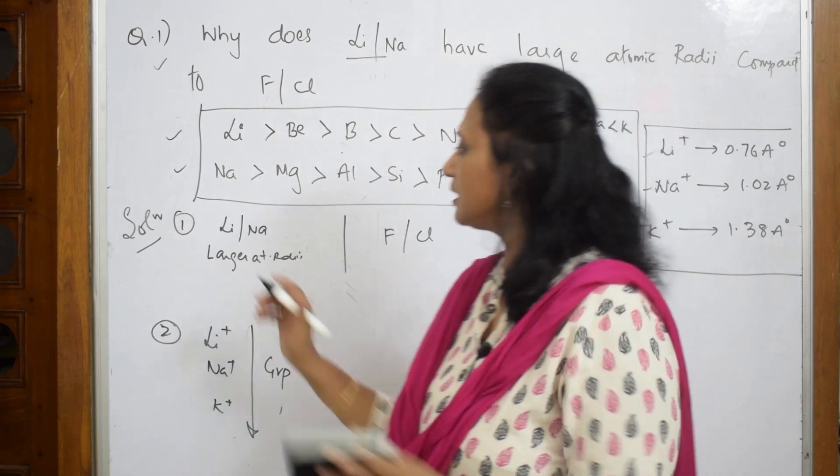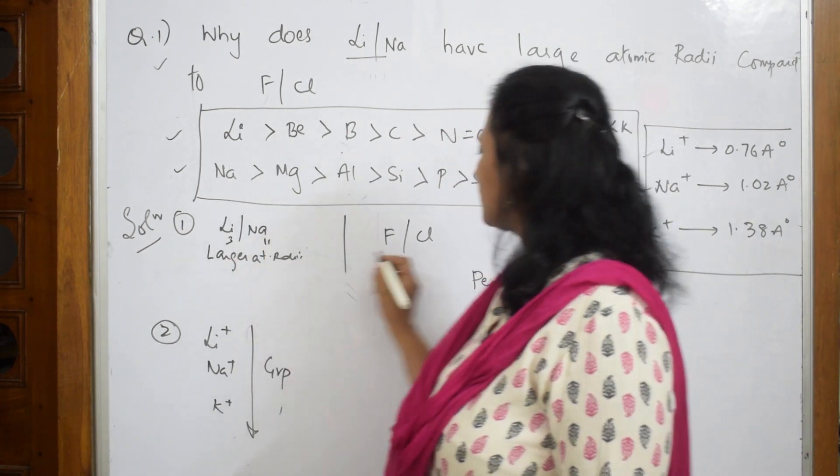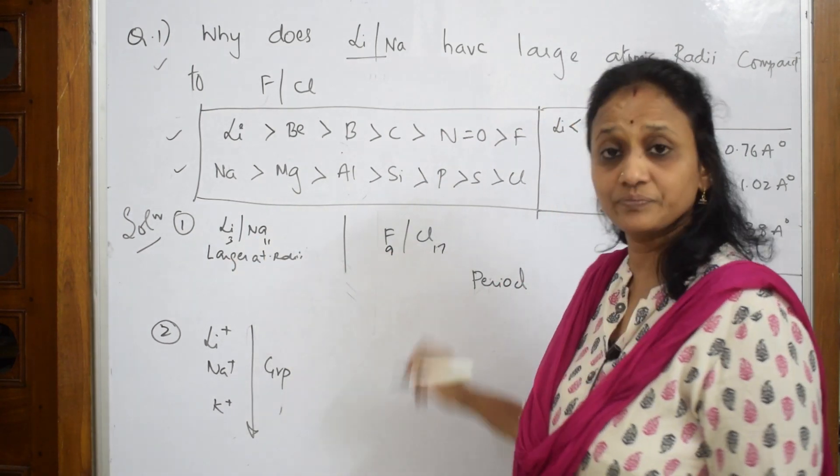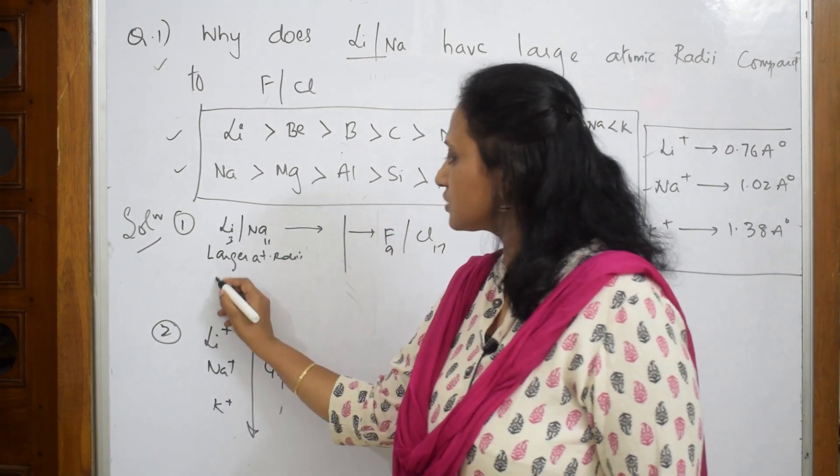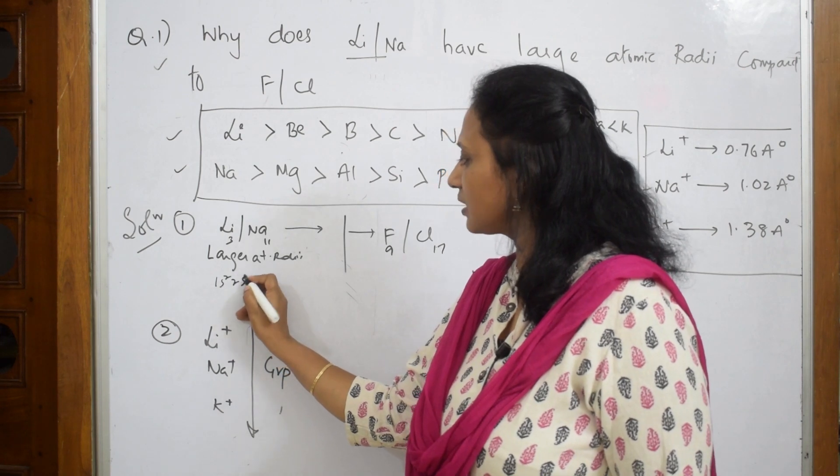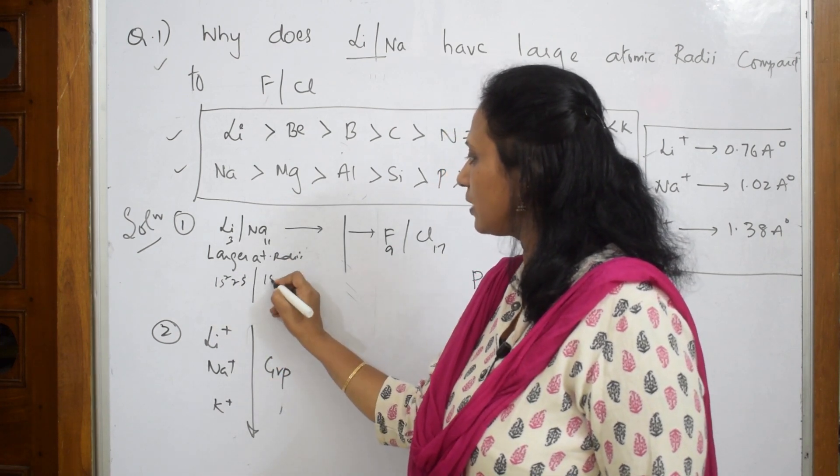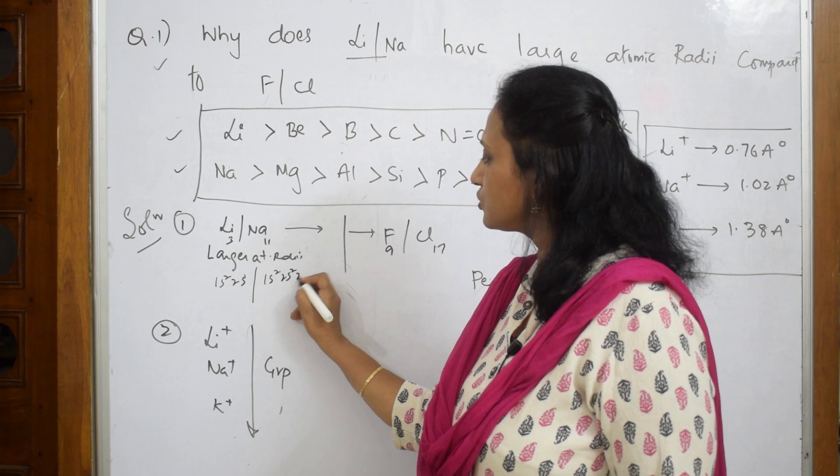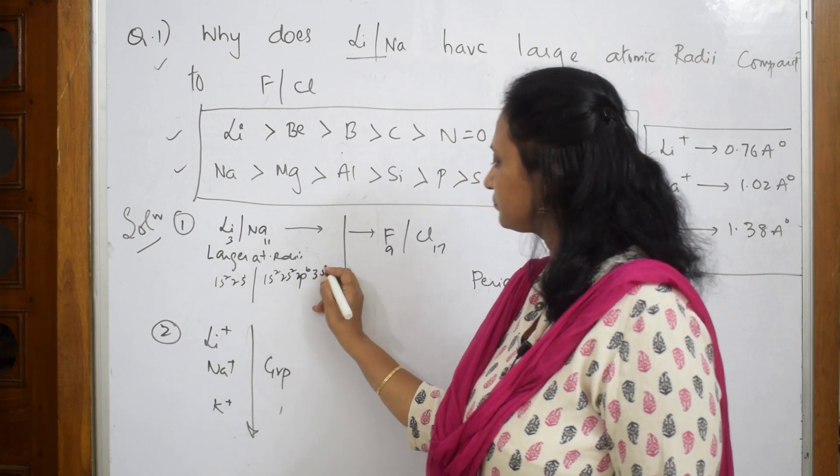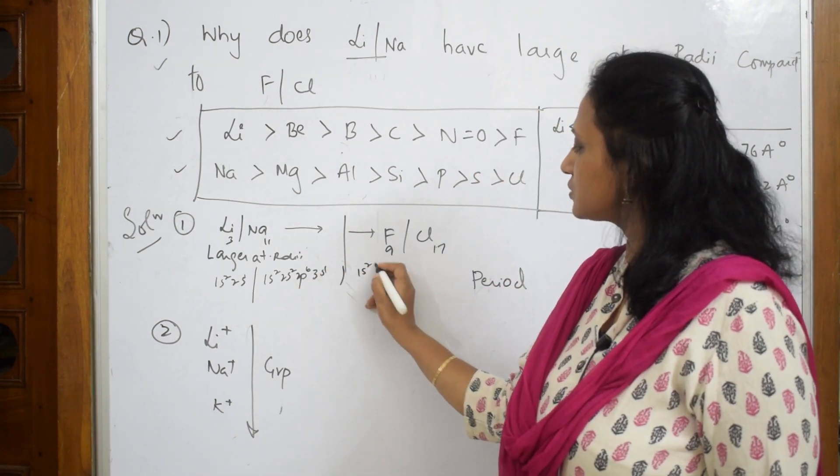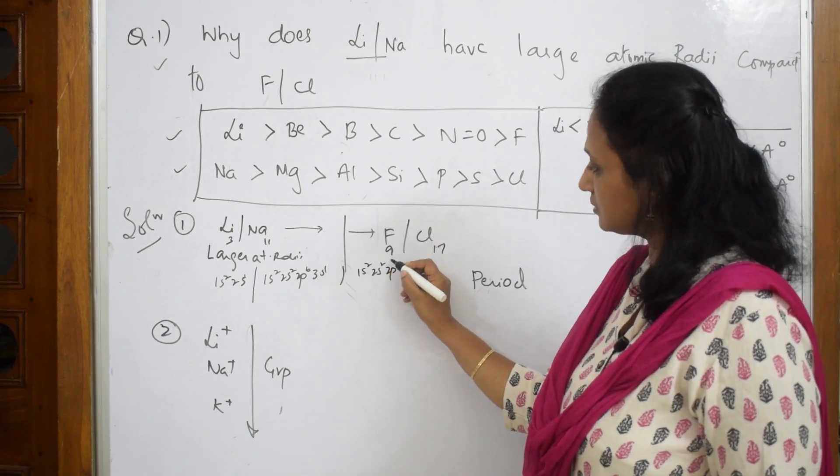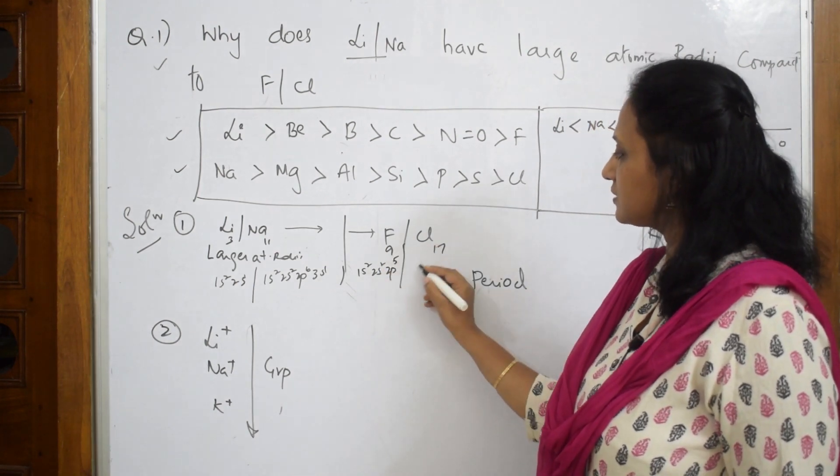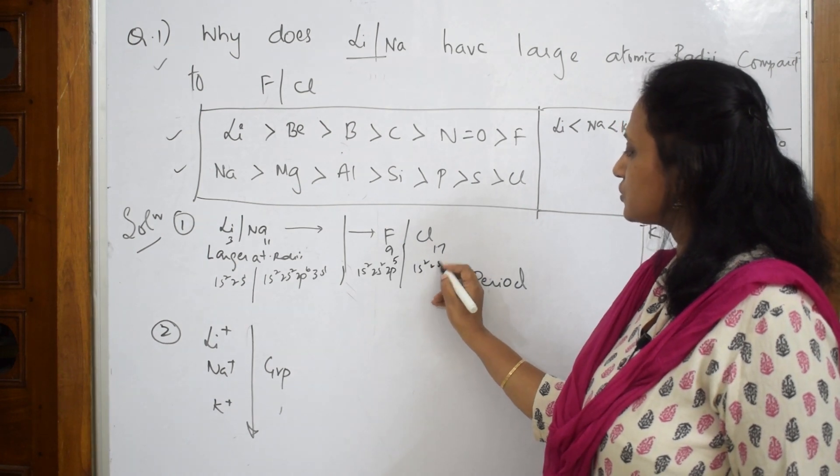But how to write it in the exam - that's important. Now lithium and sodium, let us write the configuration. Lithium atomic number 3, sodium 11, fluorine 9, and chlorine 17. This is left to right. Lithium is 1s² 2s¹. Sodium is 1s² 2s² 2p⁶ 3s¹. Fluorine is 1s² 2s² 2p⁵.